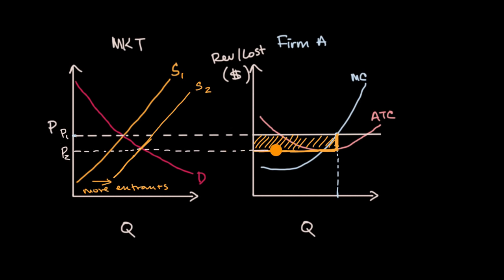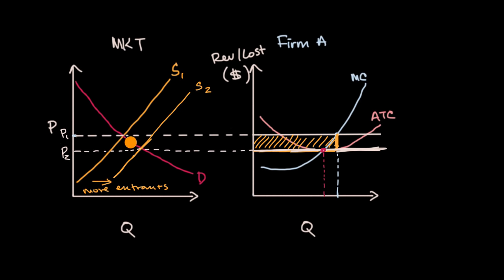The new marginal revenue curve is lower. What is the rational quantity for firm A to produce now? As long as marginal revenue is higher than marginal cost, it makes sense to produce more, up until the point they are equal. Firm A would want to produce less because the market price it must take is lower. As more and more entrants enter the market, the price goes lower and lower to the point where firm A is making no economic profit.